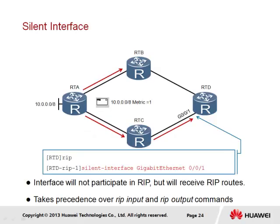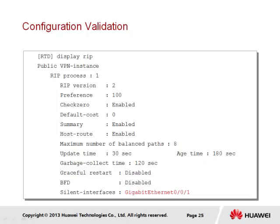A similar command to that of rip input is the silent interface command. While the interface will not participate in RIP, it will continue to receive messages and update the routing table with the messages received. If the rip input or rip output commands are configured on the interface at the same time as the silent interface command, it is the silent interface command that will take precedence. For those interfaces configured as silent interfaces, we are able to verify the configuration using the display rip command, which will list those interfaces currently operating as silent.